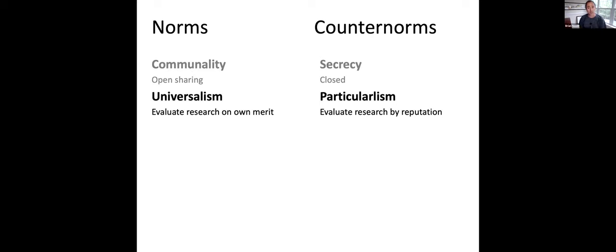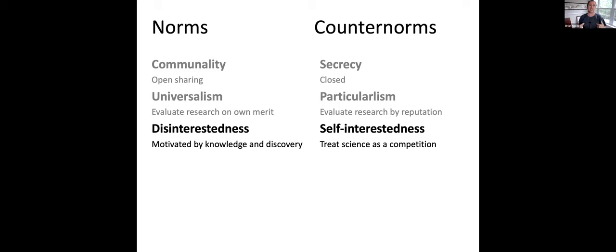The second Mertonian norm is universalism. Research is evaluated based on its own merit, the methodology, the data, the quality of the inference itself that determines its credibility rather than the fame or authority of the person speaking. The third norm is disinterestedness. Researchers are motivated by knowledge and discovery versus the counter norm of self-interestedness, to get all the grants and papers and rewards.